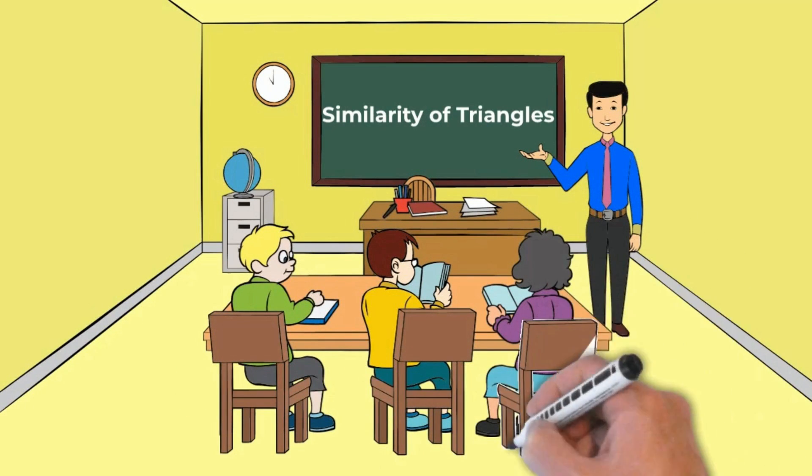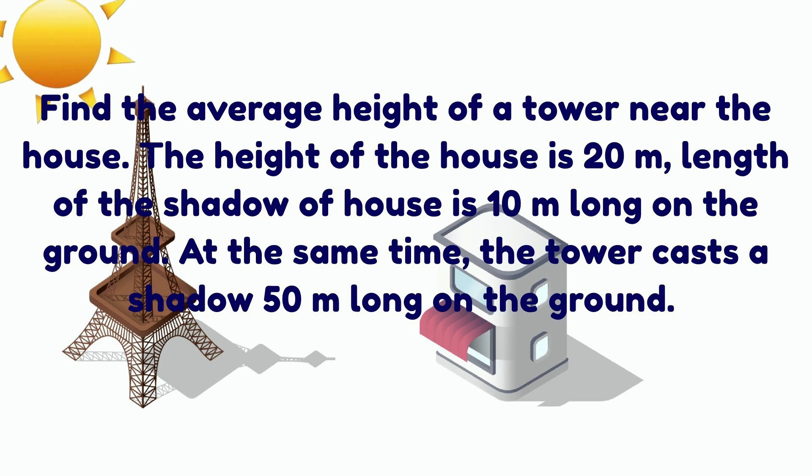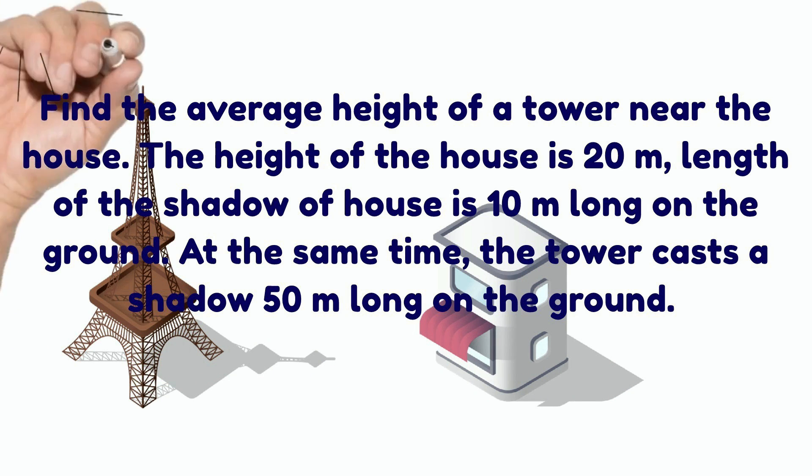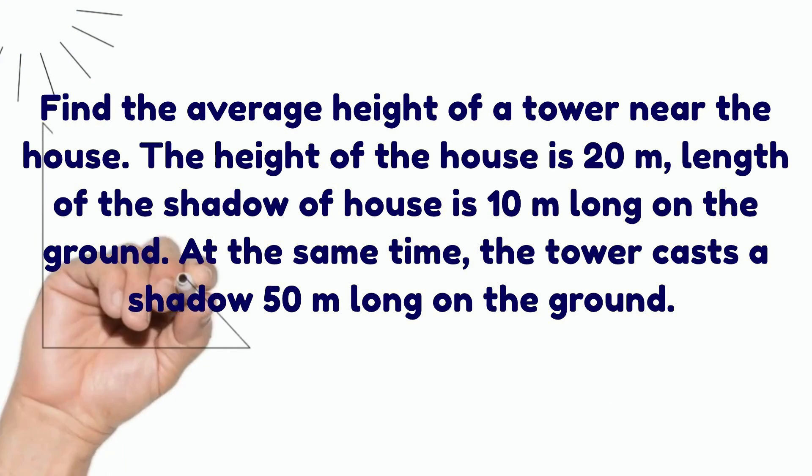The question is: Find the average height of a tower near the house. The height of the house is 20 meters, length of the shadow of house is 10 meters long on the ground. At the same time, the tower casts a shadow 50 meters long on the ground.